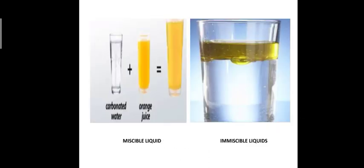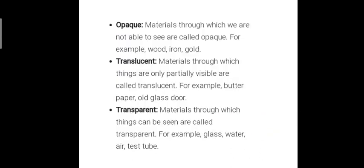You can see the example of soluble and insoluble substances here. Carbonated water and orange juice, when mixed, form a clear transparent solution — that is miscible liquids. When oil is placed in water and does not form a clear solution, with the oil floating on the surface, that is known as an immiscible liquid.